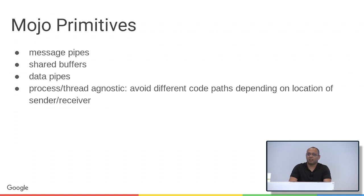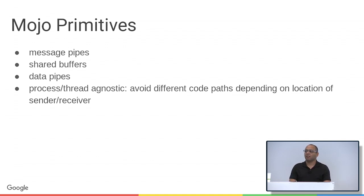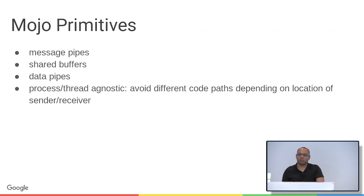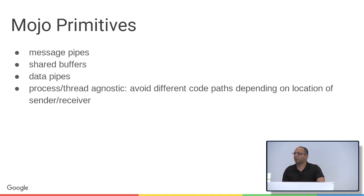The new Mojo system solves those issues automatically. It has a few key primitives: message pipes, which are bi-directional — and very cheap because no OS primitives are created for each one; shared buffers for shared memory; and data pipes, which are like shared memory but with notifications. Everything is process and thread agnostic. You could have any of these objects, use them on one thread, pass them to another thread or a different process, and everything works automatically. You can use them for a bit and then pass them off for someone else to reuse. It's really powerful and will allow us to simplify the code significantly.